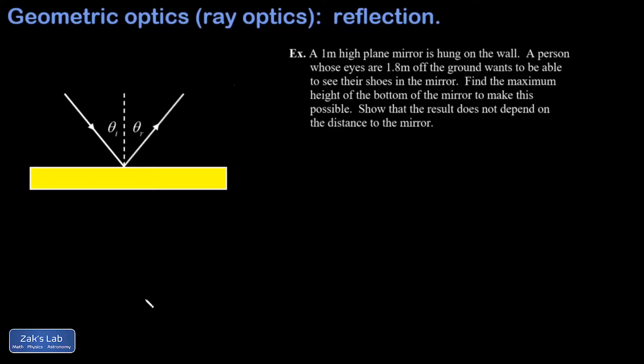In this video we introduce the law of reflection for a light ray, then we work a basic example to illustrate how it works. Now we know that light is actually a wave, but in ray optics or geometric optics we can get away with representing light waves as simple rays that propagate in the same direction as the wave motion.